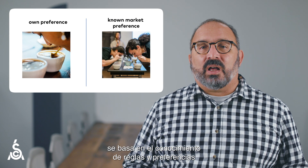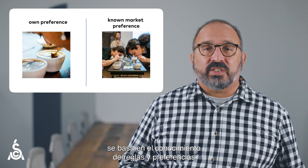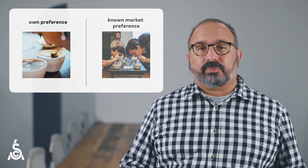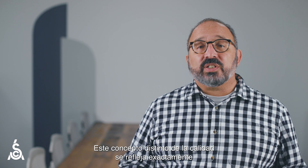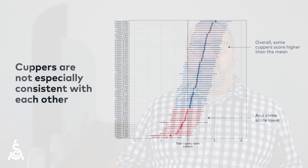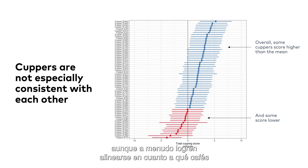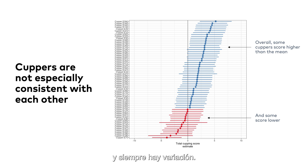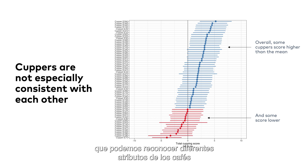The second category, a known market preference, is based on understood norms and preferences in the coffee industry or among consumers. This diverse conception of quality is reflected exactly in what we see among coffee tasters in the industry today. They don't score coffees identically, though oftentimes they reach alignment over which coffees are higher quality. This consensus is not absolute and there is always variation — this is a great strength of the coffee industry, that we can recognize different attributes of coffees in different situations.